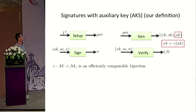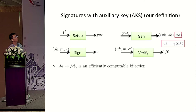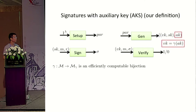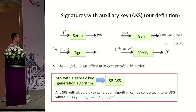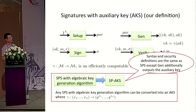This is our definition of the Signature with Auxiliary Key, or AKS scheme. It's the same as the standard signature scheme, except that the key generation algorithm additionally outputs an auxiliary key, and it's required that the verification key is equal to gamma(AK), where gamma is an efficiently computable bijection. It's a straightforward fact that all SPS schemes with algebraic key generation algorithm can be converted to a structure-preserving AKS scheme.